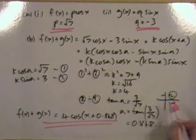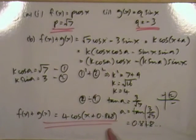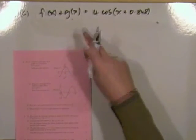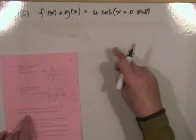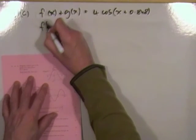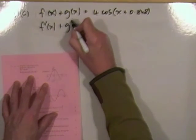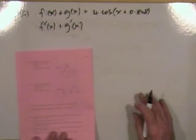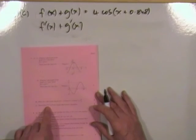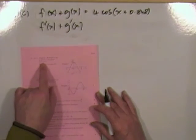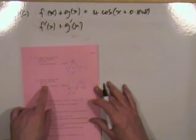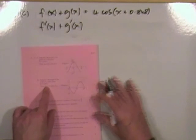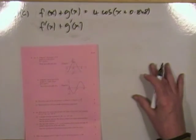That fits within the required range because pi upon 2 is greater than 1.5 and that's only 0.8. Part C: find f dash of x plus g dash of x as a single trig function. You don't need to go back to f dash of x — the cosine differentiates to negative sine, and g dash of x — the sine differentiates to cosine — and go through the whole wave function again.